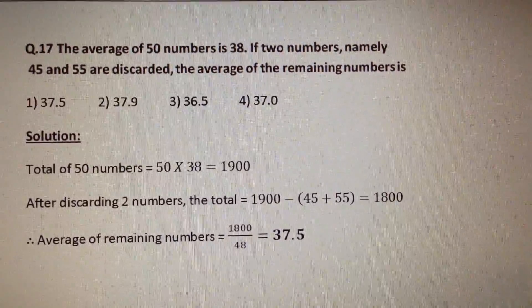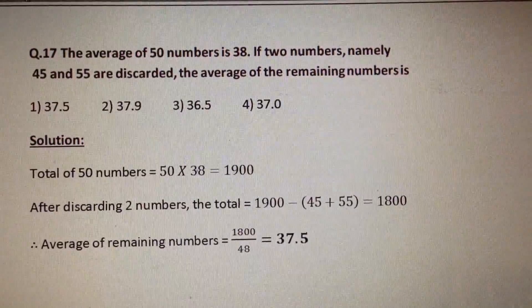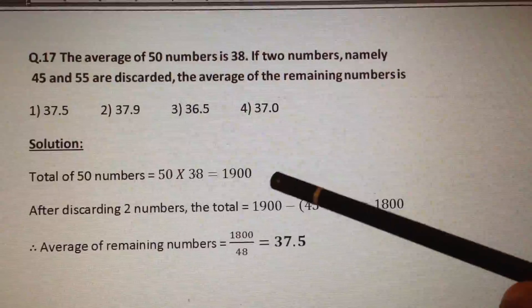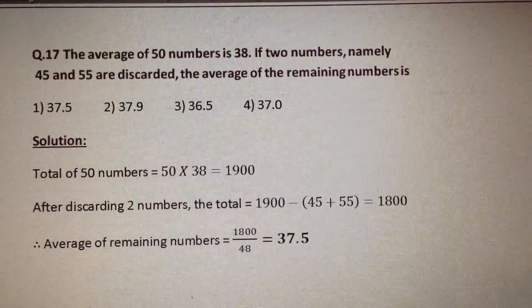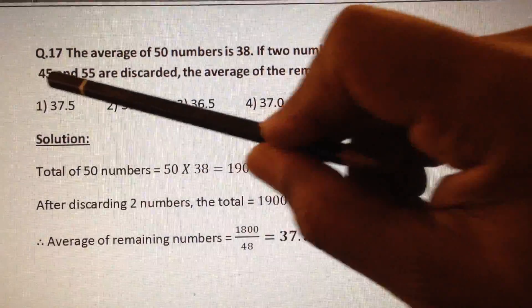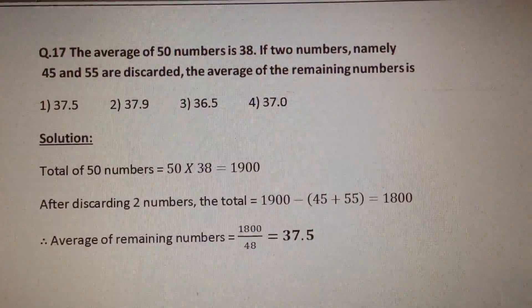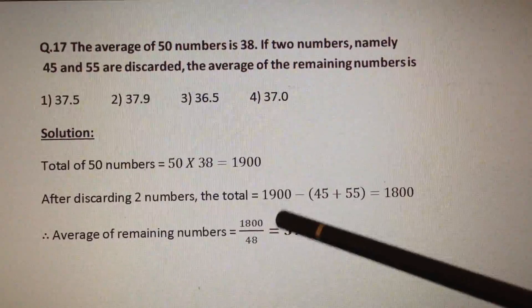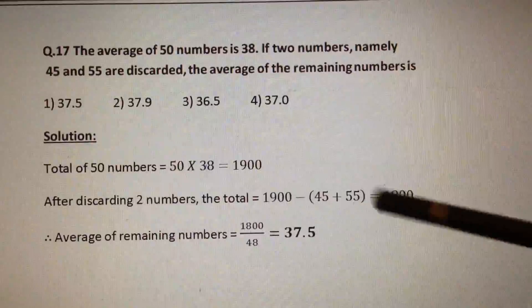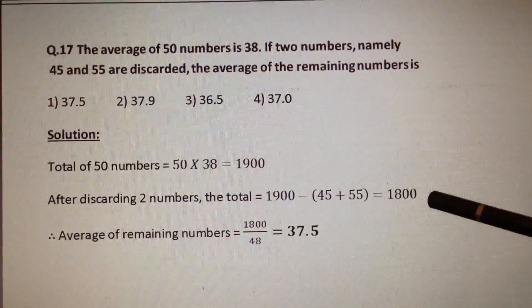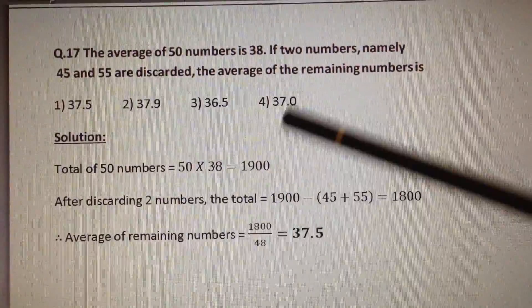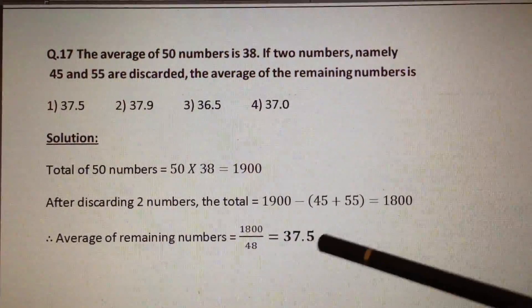The average of 50 numbers is given as 38. Therefore, the total of 50 numbers is equal to 50 into 38, which is equal to 1900. Out of 50 numbers, two numbers are discarded, which are 45 and 55. After discarding two numbers, the total becomes 1900 minus (45 plus 55), which is equal to 1800. Therefore, average of the remaining numbers is equal to 1800 by 48, which is equal to 37.5.